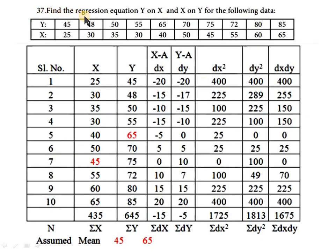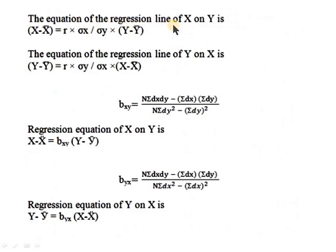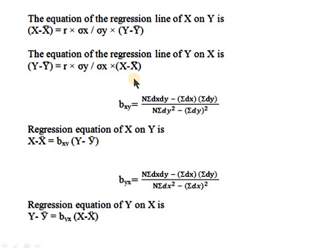Question number 37: find the regression equation of y on x and x on y for the following data. The equation of the regression line of x on y is: x minus x-bar equals r times (standard deviation x / standard deviation y) times (y minus y-bar). Here r is the correlation coefficient, x-bar is the mean of x values, and y-bar is the mean of y values. The regression line of y on x is: y minus y-bar equals r times (standard deviation y / standard deviation x) times (x minus x-bar).